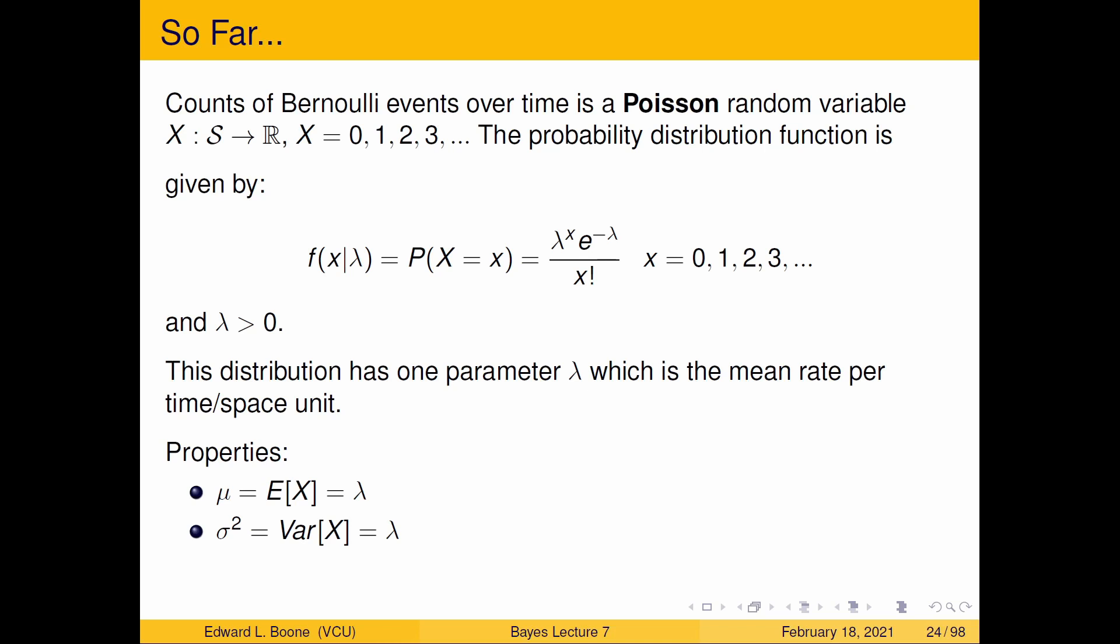So we've been playing around with this idea of counts over time, and we've came up with this Poisson random variable that has the following distribution function. It counts over time, so it can only take the values 0, 1, 2, 3, and so on. What we're interested in is this parameter lambda here, and lambda is the average or the mean rate per time space unit, and it can only be positive. What we want to do is try to come up with prior distribution for it, because it's also our mean and our variance for this distribution.